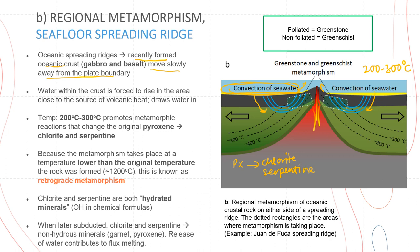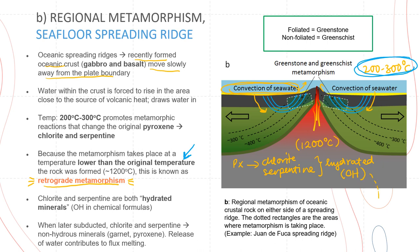Because 200 to 300 degrees Celsius is much lower than the original temperature at which the rock was formed — about 1200 degrees Celsius — this is known as retrograde metamorphism. Both chlorite and serpentine are known as hydrated minerals because they have OH in their chemical formulas. When this oceanic crust later gets subducted, these hydrated minerals are changed into non-hydrous minerals such as garnet and pyroxene, and this contributes to flux melting.